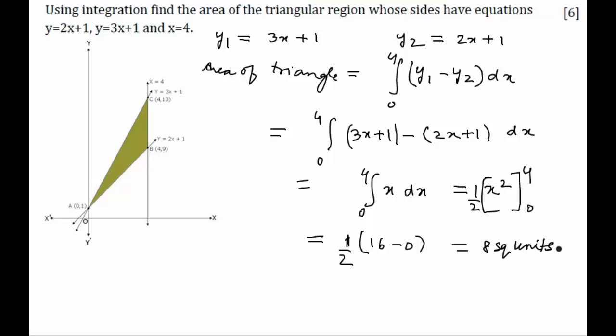Do not forget the units. If not given, write it in square units. So, the area of the triangle that was formed is 8 square units.